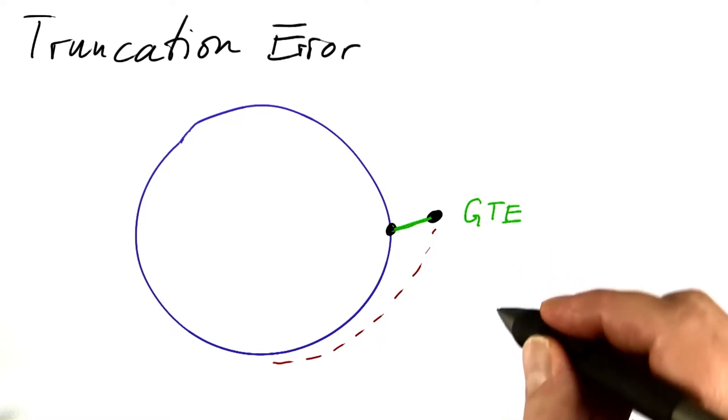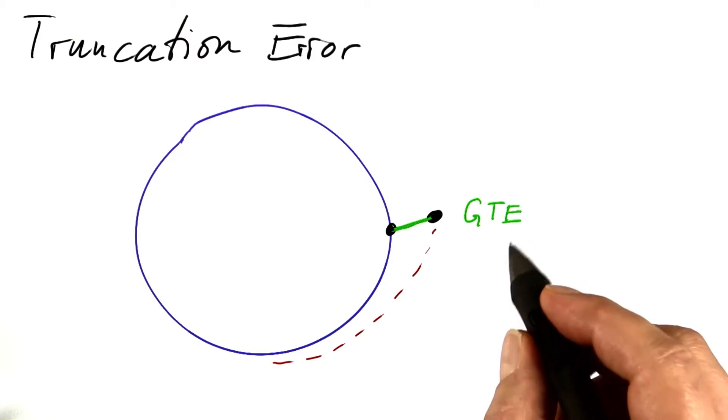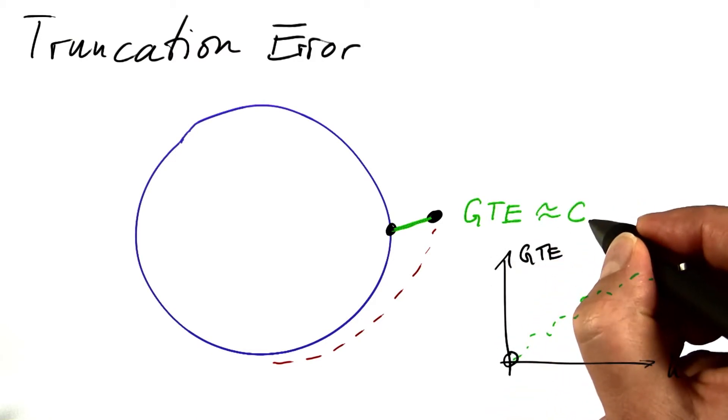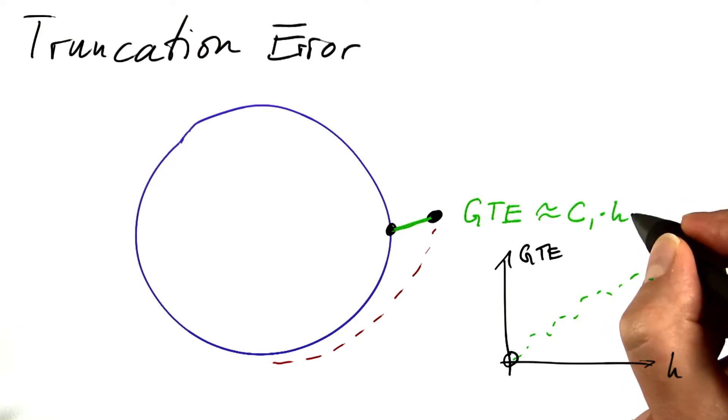And as we saw, this global truncation error depends approximately linearly on the step size. It's more or less some constant times h. For the forward Euler method, this is different for other methods.